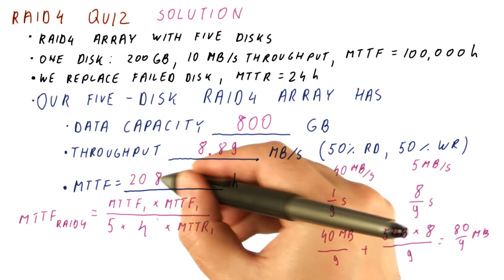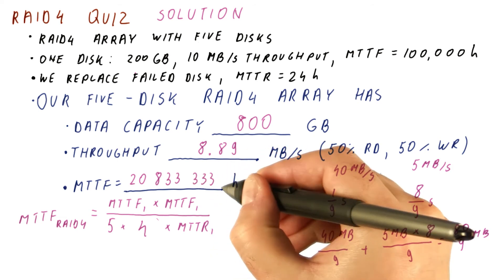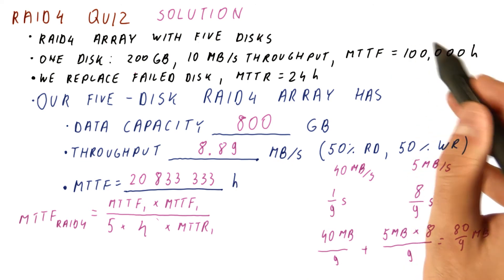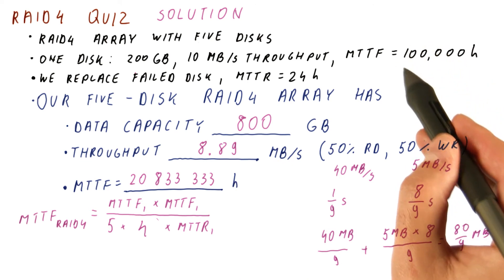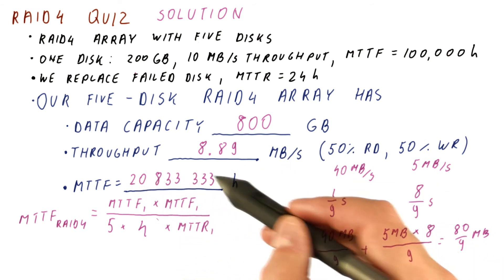The overall number is 20,833,333.33 hours, which again is much better than this. And we already said that this is about 11 to 12 years. This is more than 2,000 years.